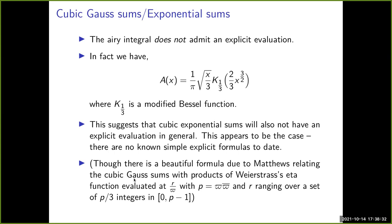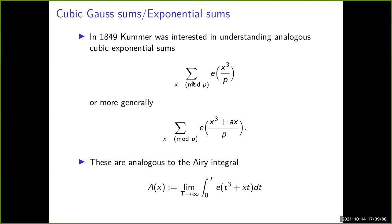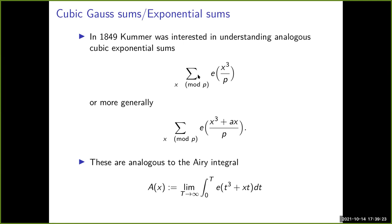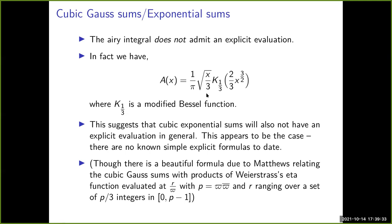The closest thing to a closed formula is one due to Matthews, which expresses the cubic Gauss sum as a product of Weierstrass eta functions evaluated at r/π, where π is the prime over which p splits in the Eisenstein integers. This formula is beautiful but not efficient — you have to evaluate the Weierstrass eta function at p/3 terms, so it doesn't give an efficient way to evaluate these cubic Gauss sums.